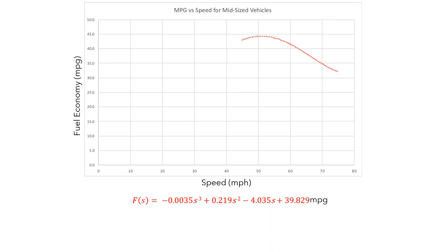Our goal is to find where the fuel economy is largest and smallest. The largest value will occur somewhere around here, where the graph hits a peak. This happens when f stops increasing and starts decreasing.